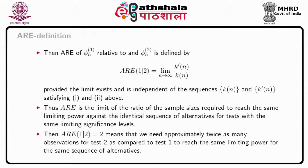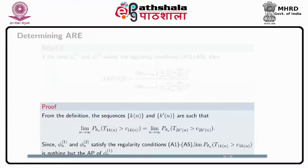Thus ARE is the limit of the ratio of the sample sizes required to reach the same limiting power against the identical sequence of alternatives at the same limiting significance levels. An ARE equal to 2 means we need approximately twice as many observations for test 2 as compared to test 1. Test 1 is better or worse than test 2 according to whether ARE is greater or less than 1.